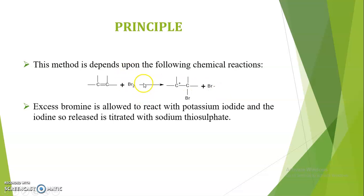The excess bromine that remains is then allowed to react with potassium iodide, which is added externally. In this reaction, bromine acts as the oxidizing agent while potassium iodide acts as the reducing agent. Bromine gets reduced and potassium iodide gets oxidized, resulting in the liberation of iodine. This liberated iodine is then titrated with sodium thiosulphate in an iodometry-type titration, where sodium thiosulphate acts as the reducing agent from the burette.